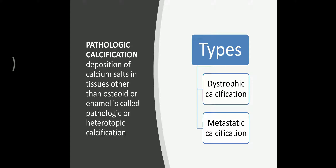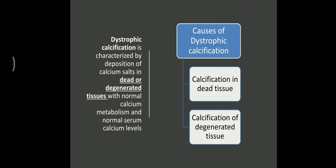There are two types: dystrophic calcification and metastatic calcification. Dystrophic calcification occurs over dead and degenerated tissue, where there is deposition of calcium salts. Here, the normal calcium metabolism and blood calcium level remain normal.